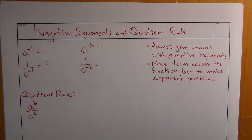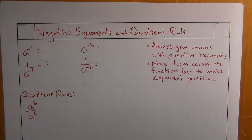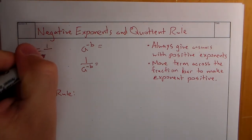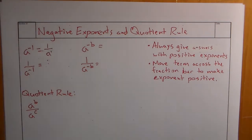What happens whenever we have negative exponents or we divide with exponents? If I have a to the negative 1, or any value to a negative exponent, we always want to represent our answers with positive exponents. So a to the negative 1 — we take the reciprocal of it, and it becomes 1 over a. Moving it across the fraction bar gives us a positive exponent.